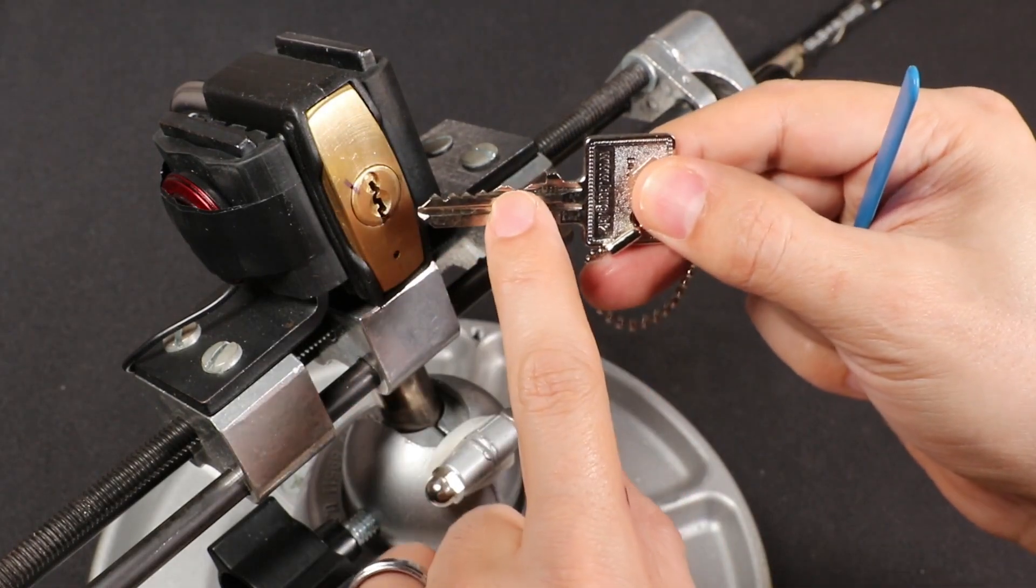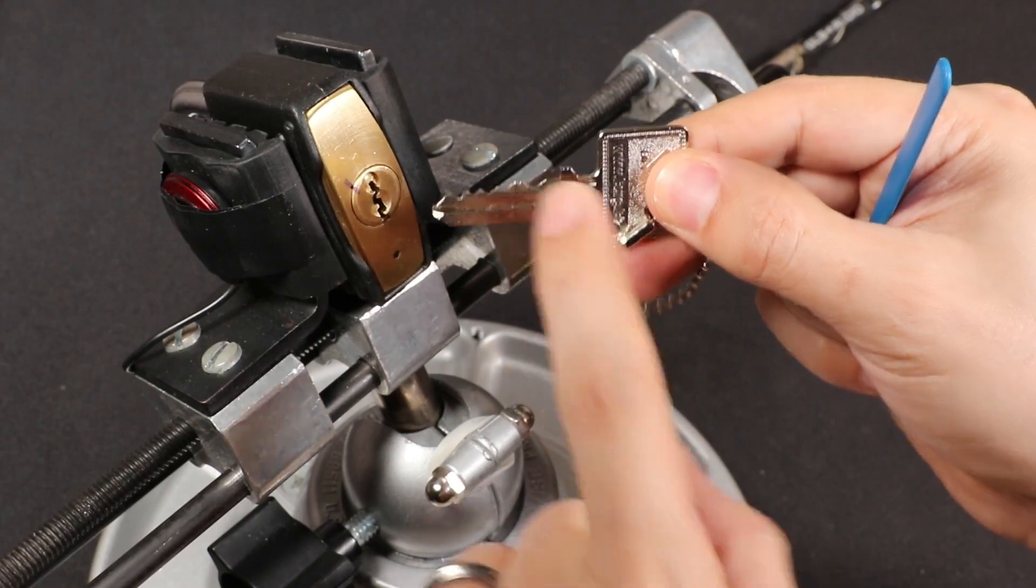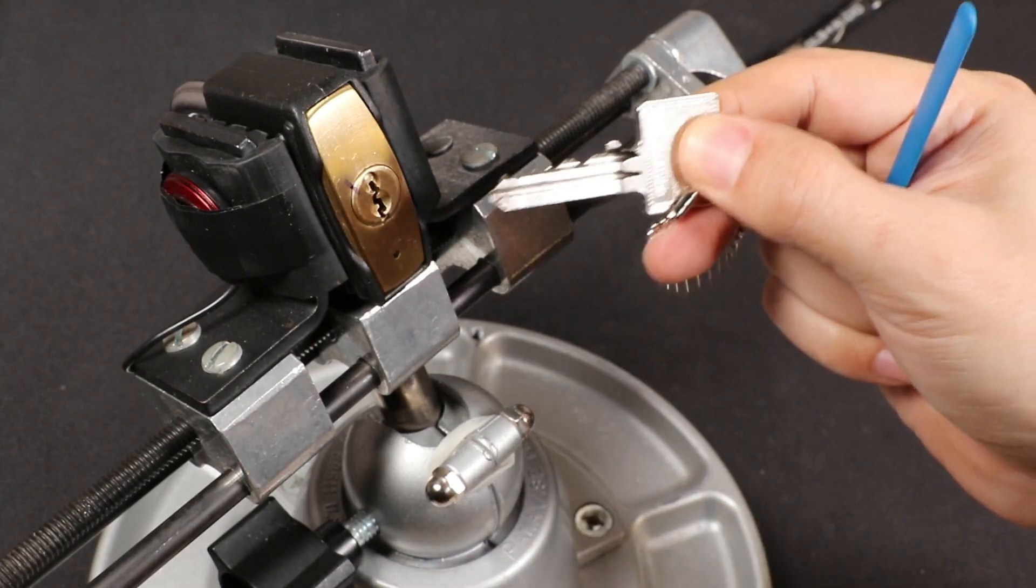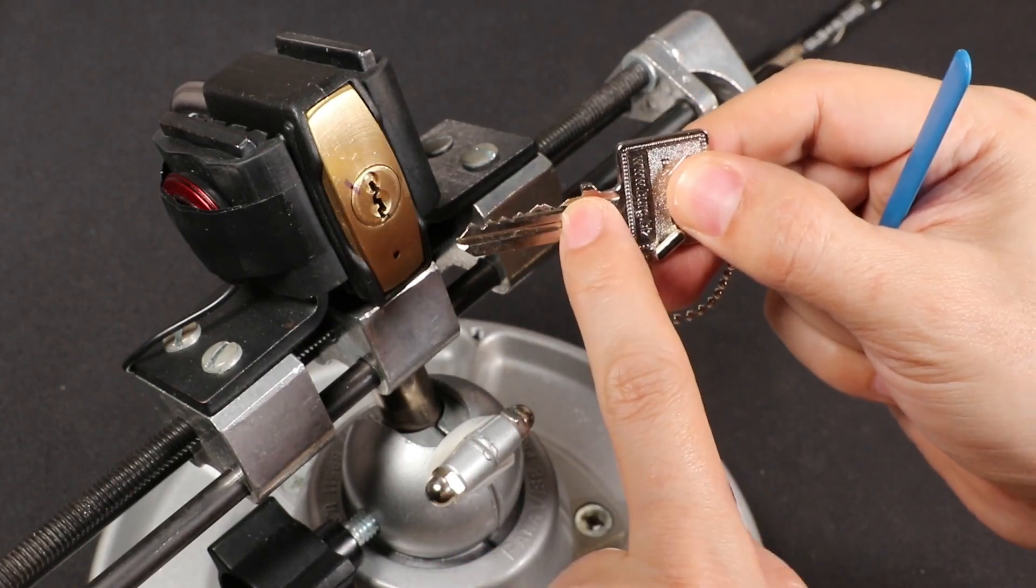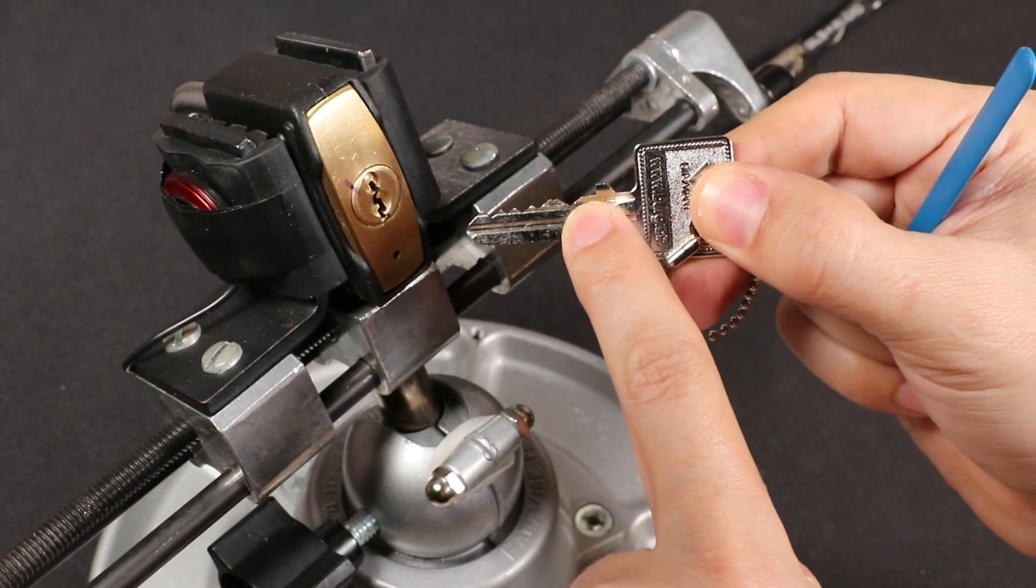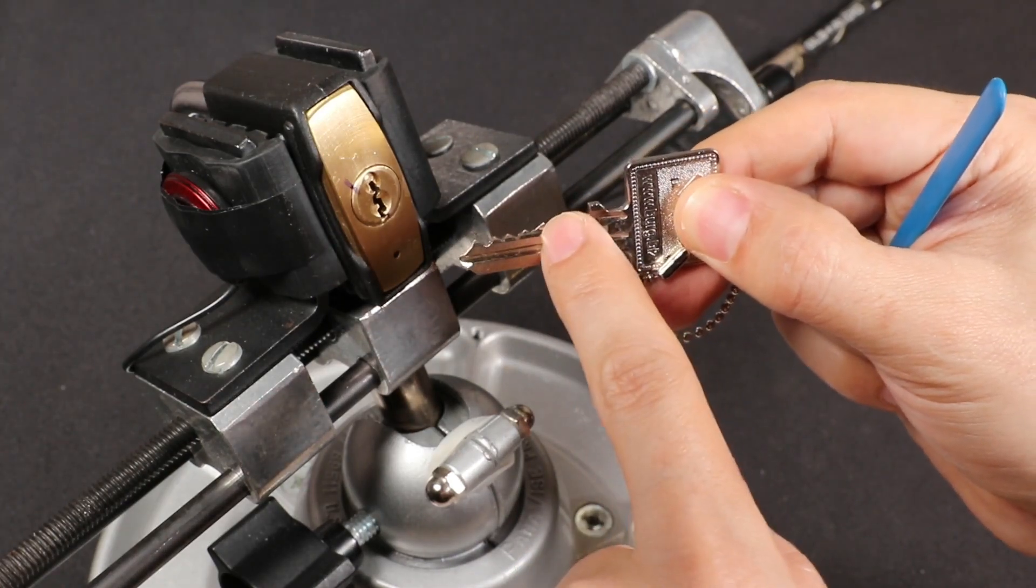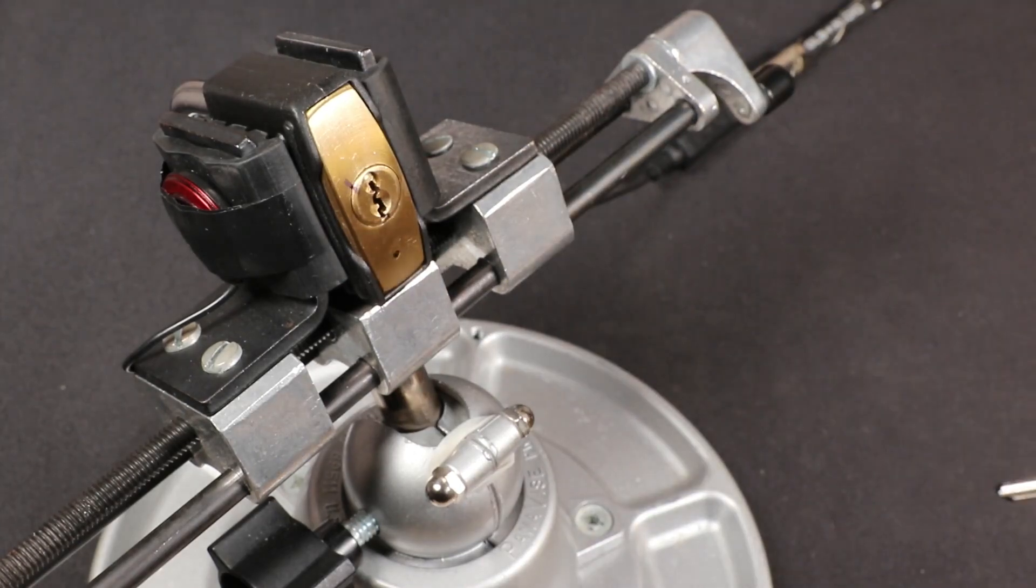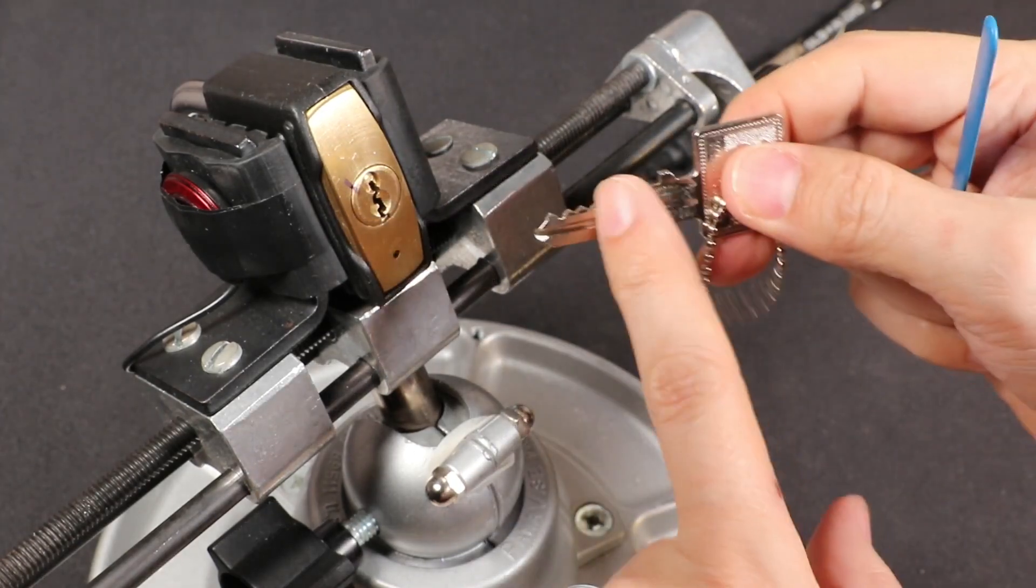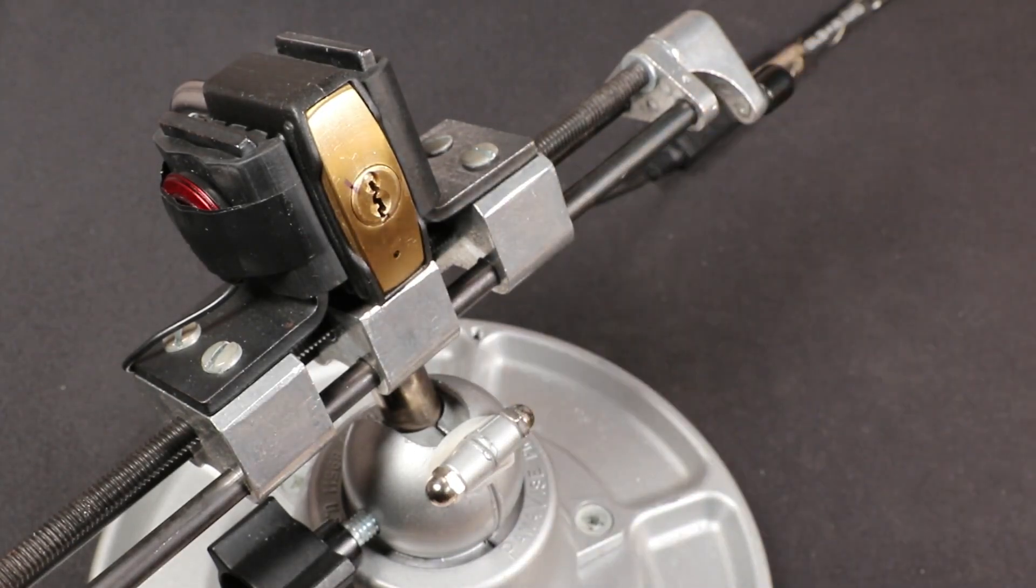If we look at this key, we can see it has this high lift on pin 2 and that's going to be a real pain to pick. It's not so much because it's behind this low lift, but the sheer height of the pin causes issues.